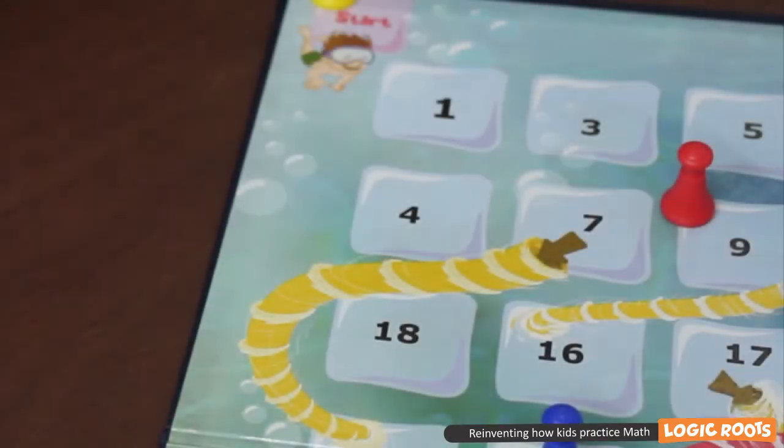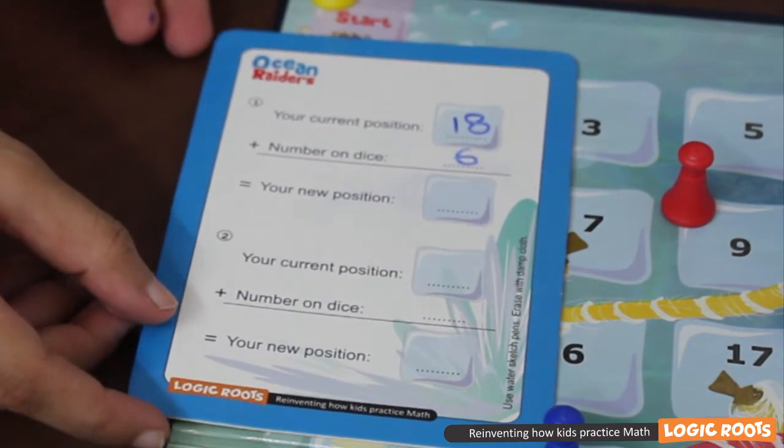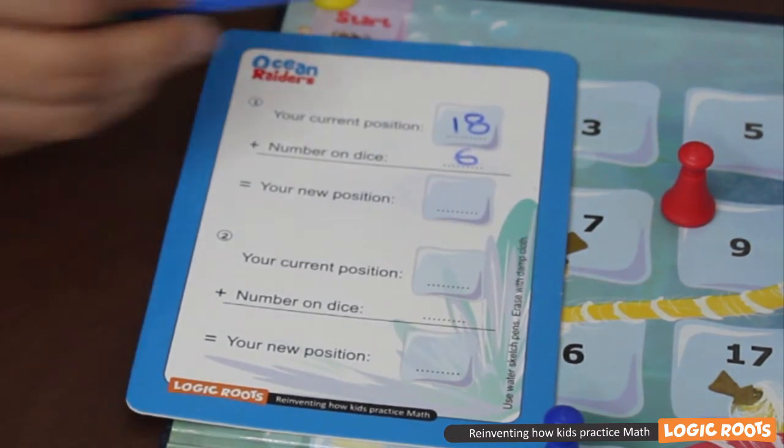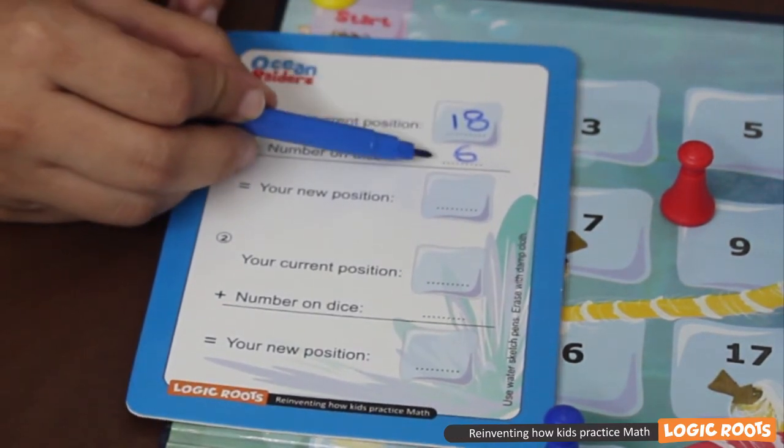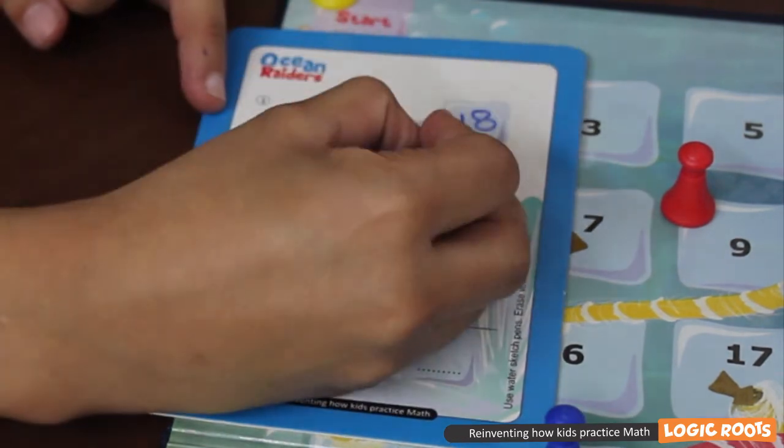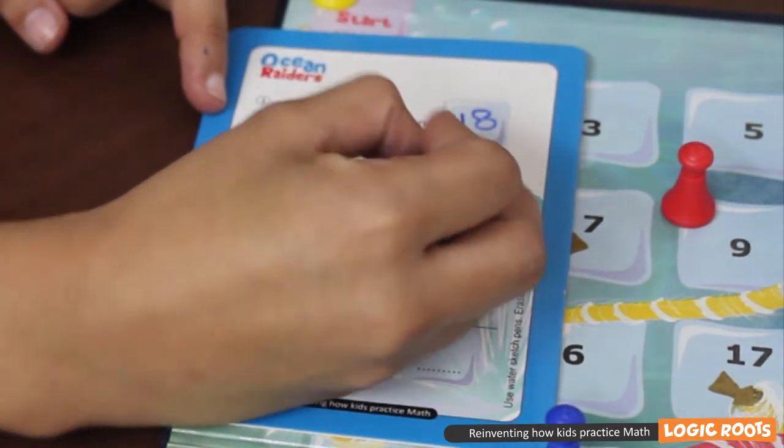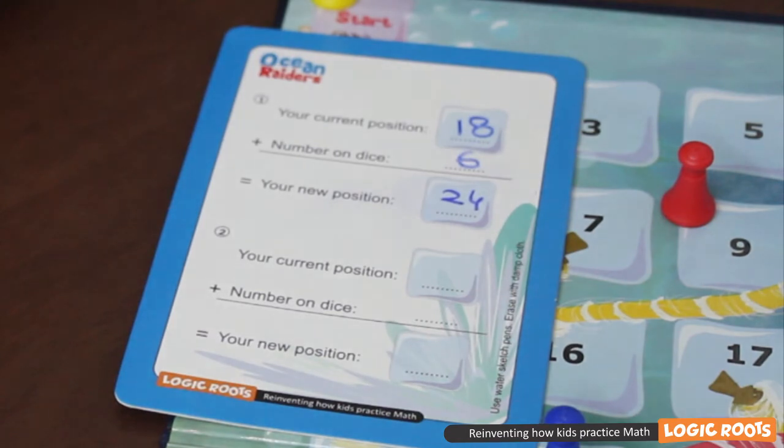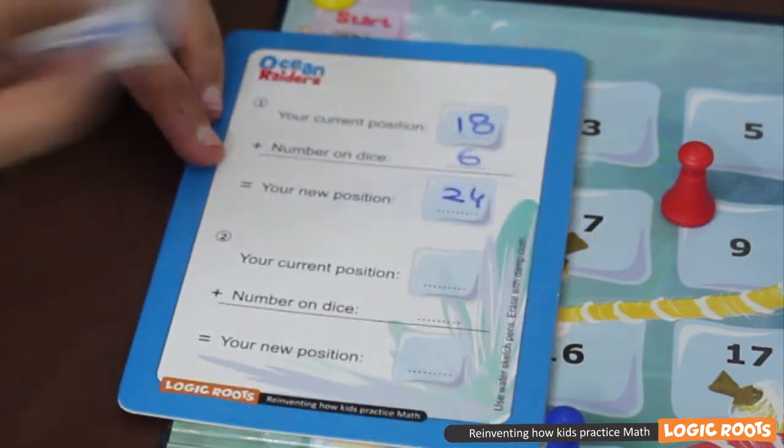To help the players move ahead, this game comes with write and wipe logic slates. You could write your current position, the number on the dice, and add them to find your new position without making a mistake. And with a damp cloth, you can easily wipe the slate clean.